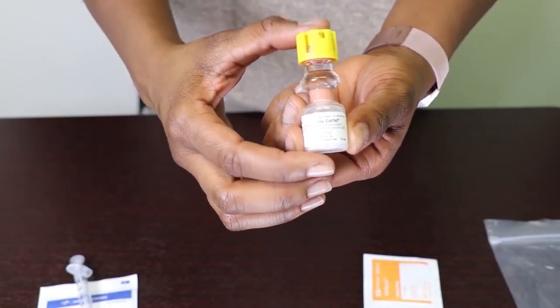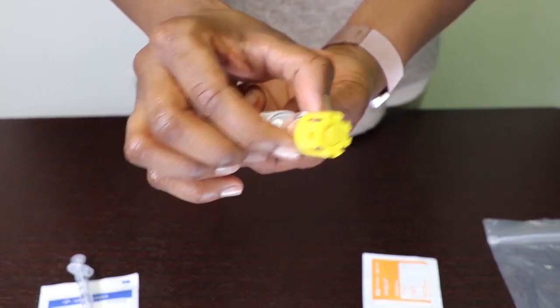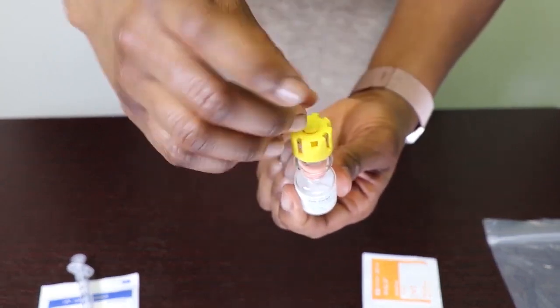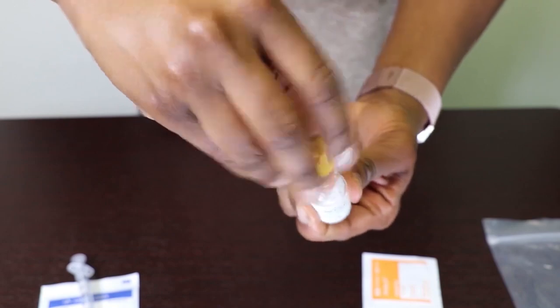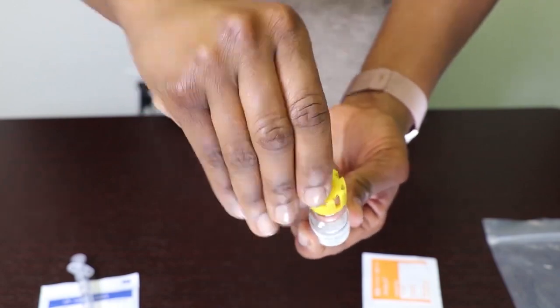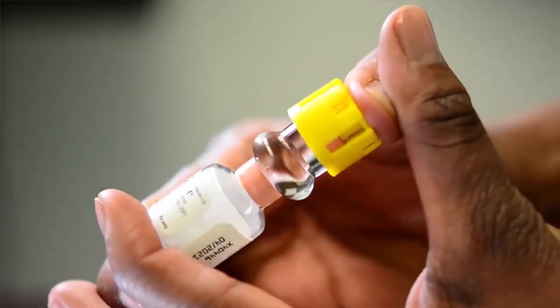To mix the medication, take the vial, remove the little yellow tab in the center, then push down hard on top of the vial to move the red stopper to allow the fluid to flow into the part of the vial that contains the medication powder. Gently swirl the vial to mix the powder and fluid. This will take under a minute.